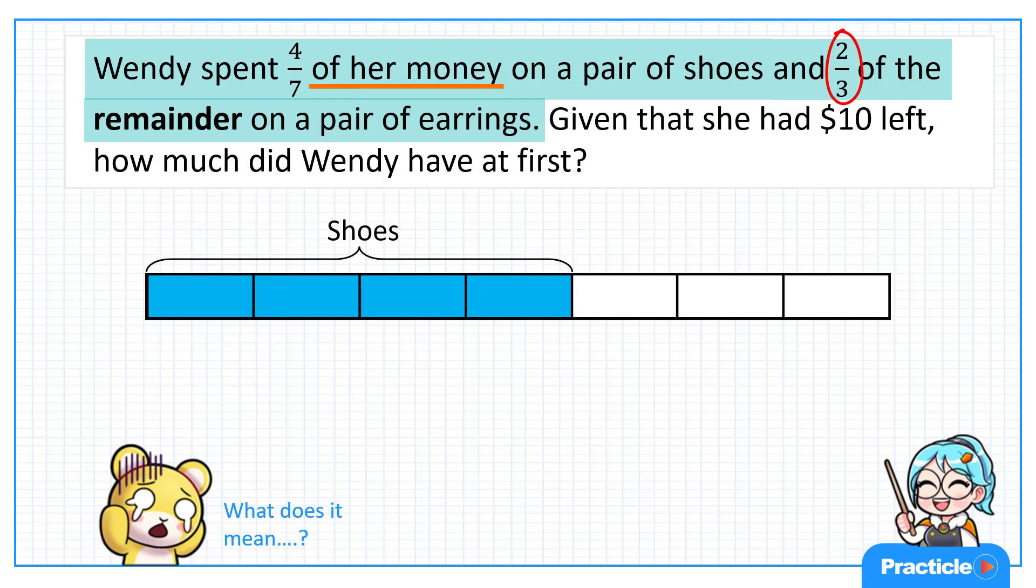Instead, we are looking at two-thirds of the remaining amount of money that Wendy had. And that's the amount of money that she's left with after buying the shoes. And this is why this word problem is a remainder concept question. The fraction refers to different sets.